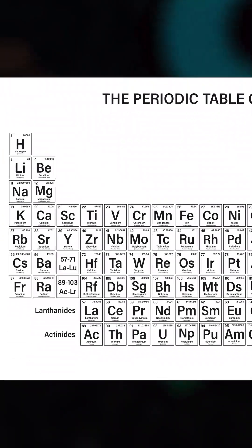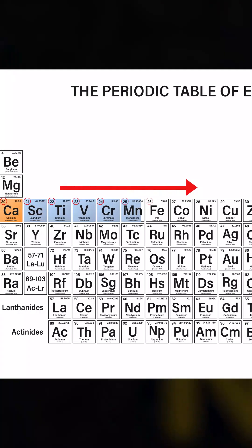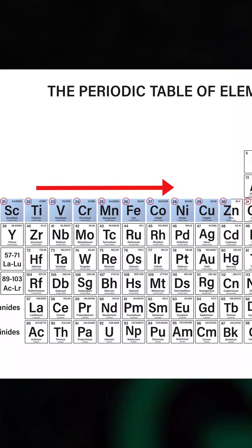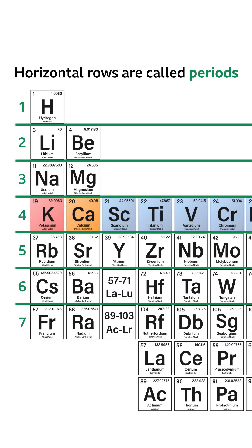You'll see that as we go from left to right across the table, the atomic number increases by one. And these horizontal rows are called periods.